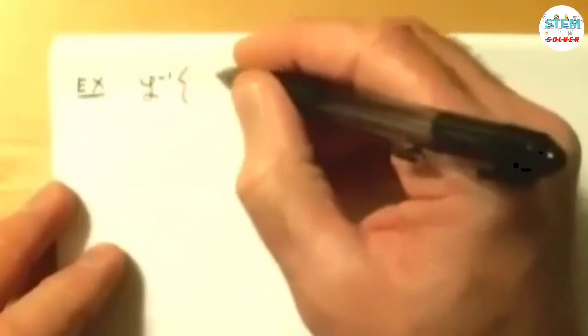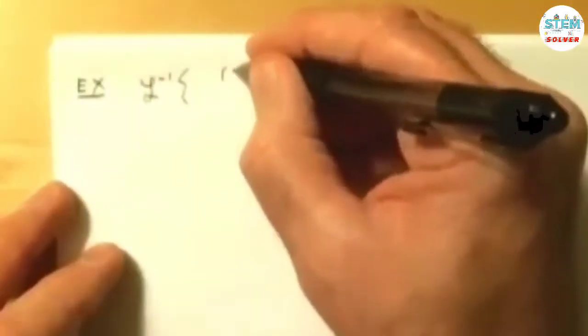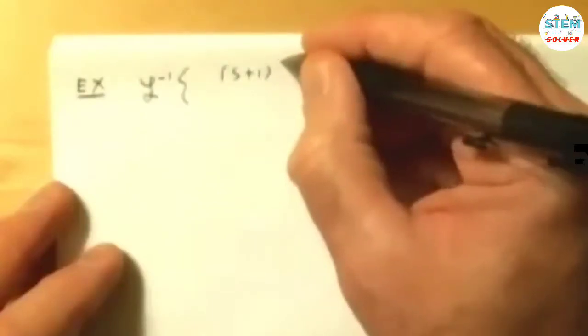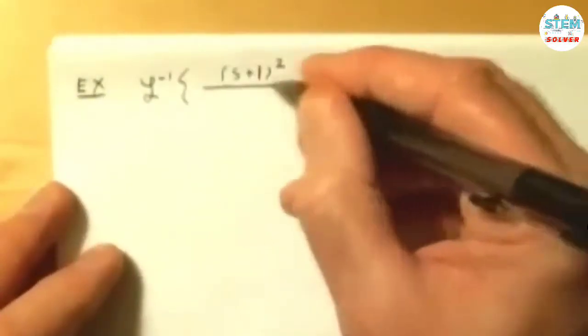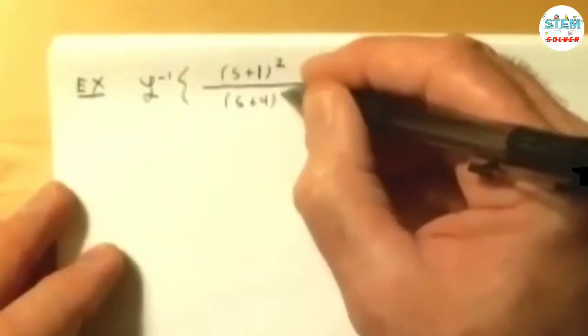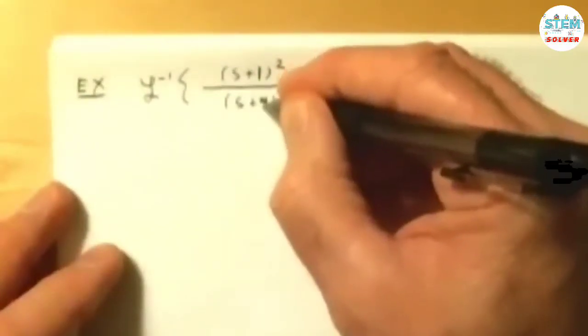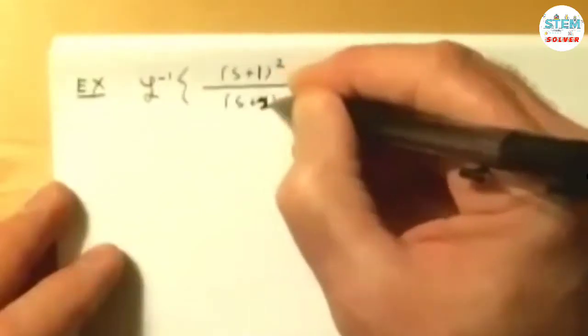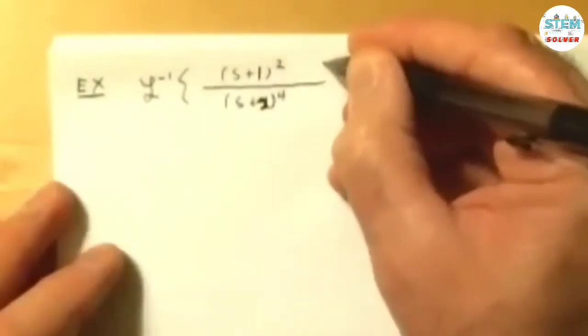You have the inverse Laplace transform of s plus 1 squared over s plus 2 to the 4th.